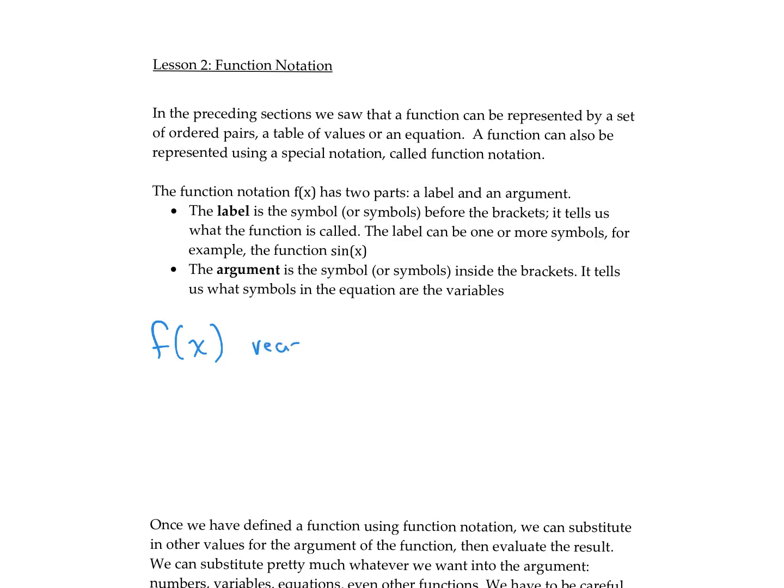This reads as f of x. We can use any letter. We could say g of x, h of x and so on. The label is the symbol before the bracket, and the argument is what's in the bracket. So it's just a different way to represent a function instead of using x and y.